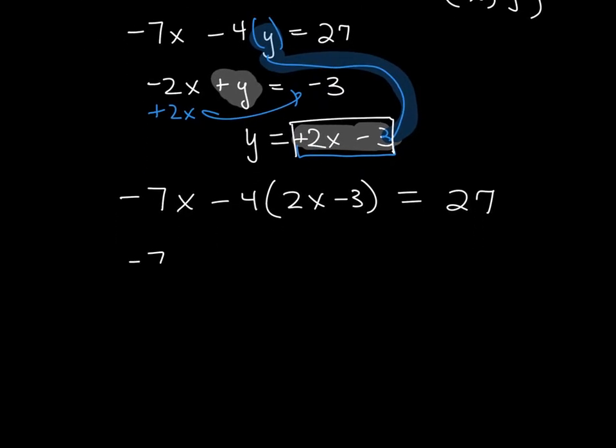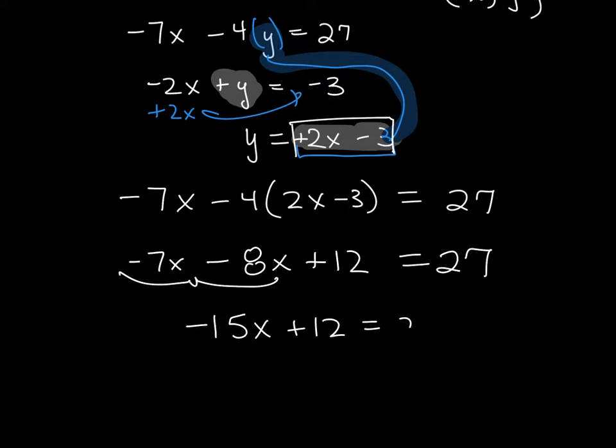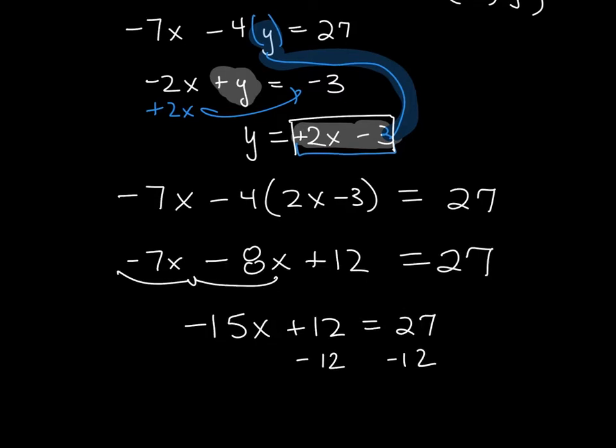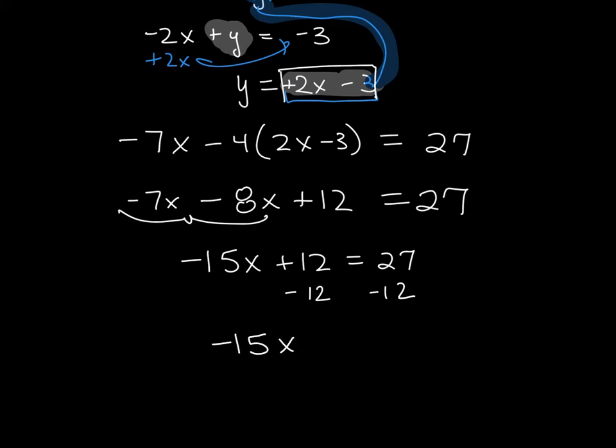I'm going to bring down my -7x. I take my -4 and multiply it times 2x and -3, which will give us -8x + 12 = 27. Combine my like terms, which gives me -15x + 12 = 27. Now I want to solve for x, so I subtract 12 from both sides and I am left with -15x = 15. Divide both sides by -15, and we have our first solution, x = -1.